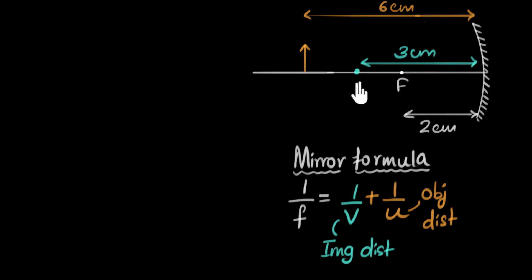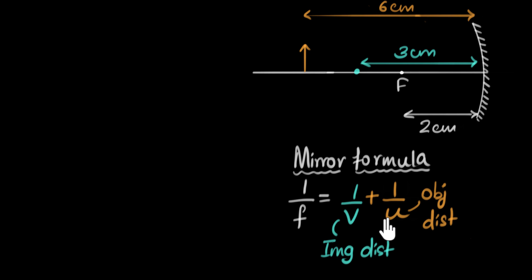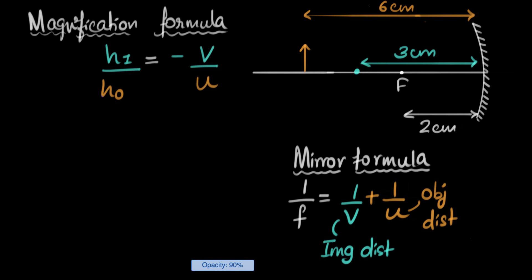Since we want to figure out the height of this image without drawing ray diagrams, we need to use a formula. Looking at the mirror formula we already know, notice that it has nothing to do with heights — it's only useful to find how far the image is from the mirror. So there must be another formula concerned with the heights of images and objects. And there is — it's called the magnification formula.